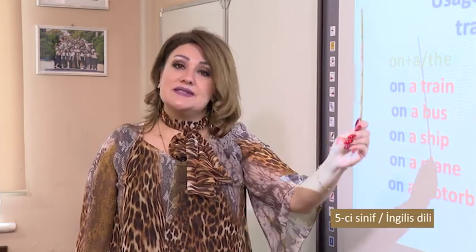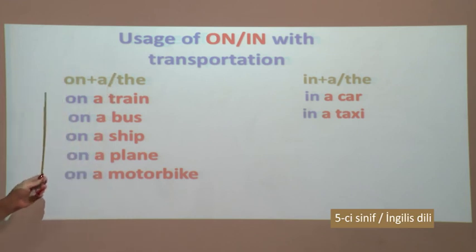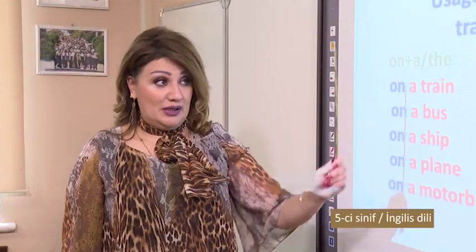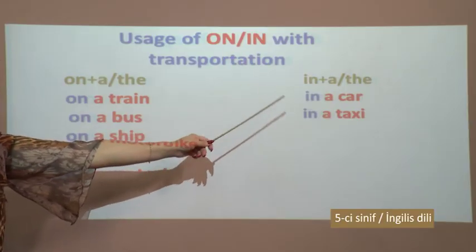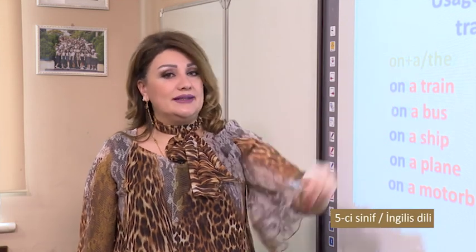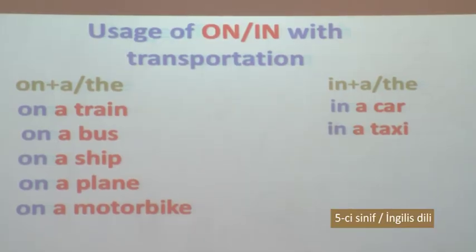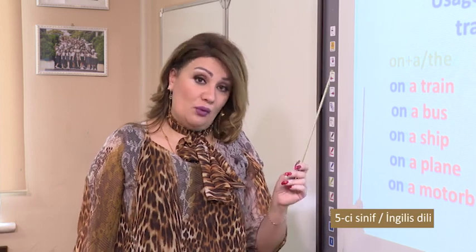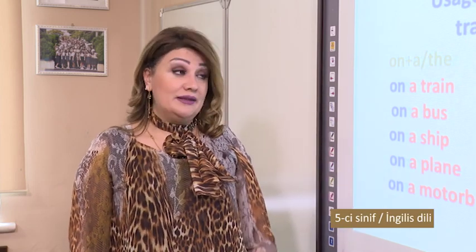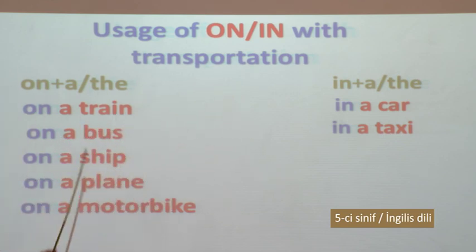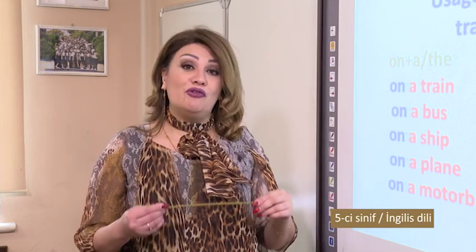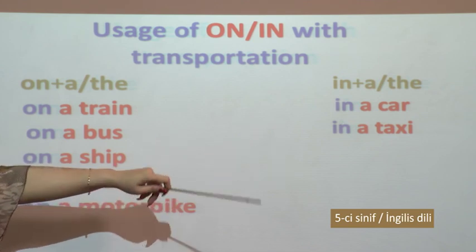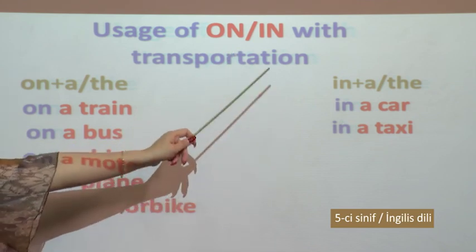Usage of 'on' and 'in' with transportation. On plus a: on a train, on a bus, on a ship, on a plane, on a motorbike. In plus a: in a car or in a taxi. What is the difference? We don't use an article after 'by' when we travel anywhere, but we use an article after 'on' or 'in' when we travel. If we can stand and walk on a means of transportation, we use 'on'. If we can't stand up or walk in it, we use 'in'.